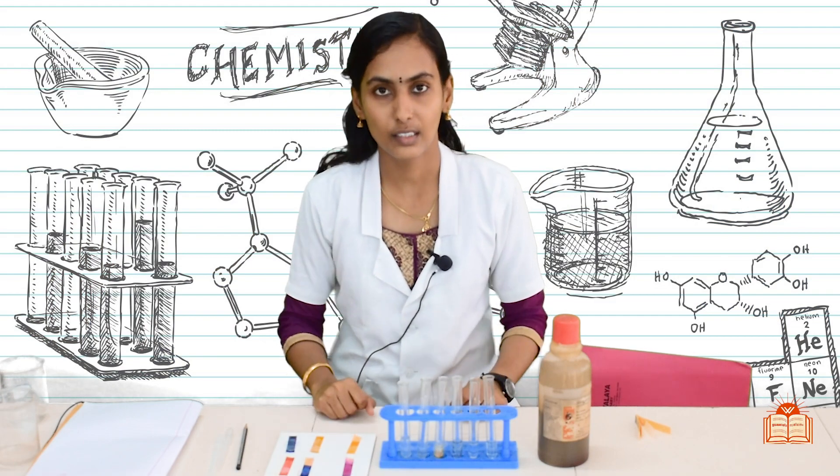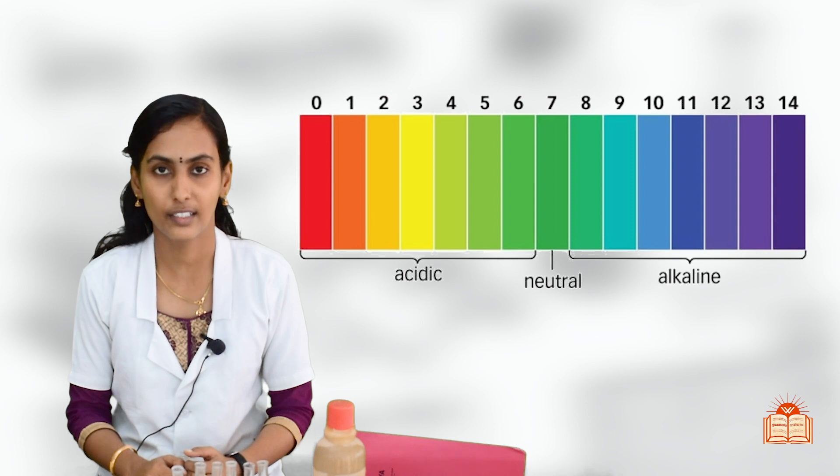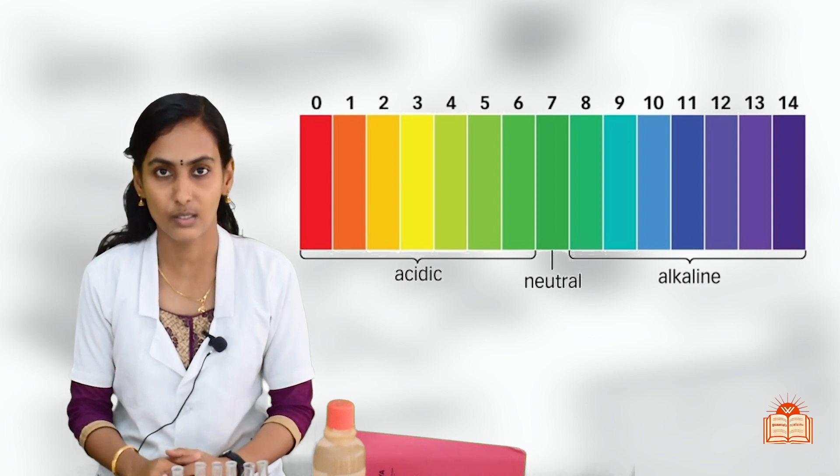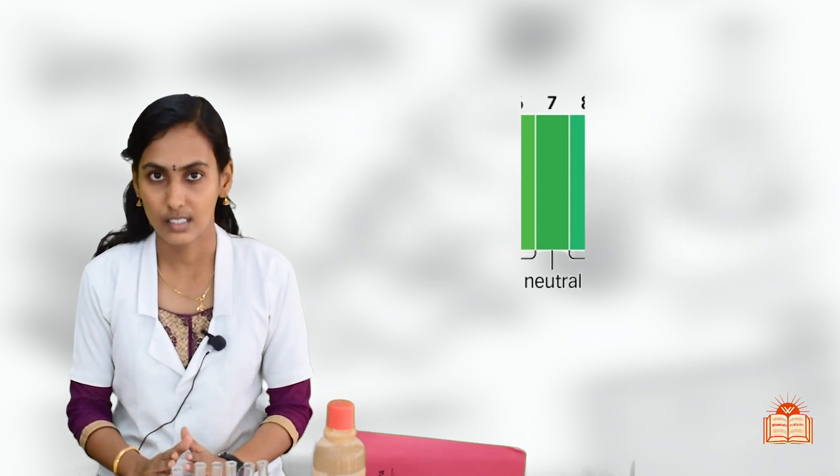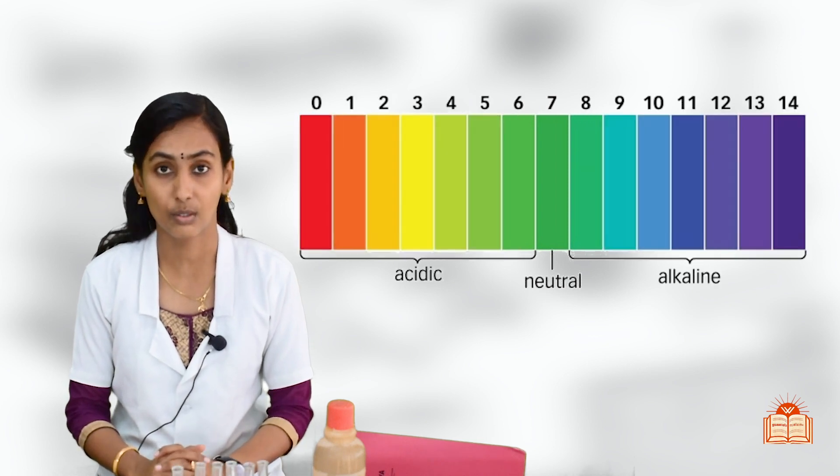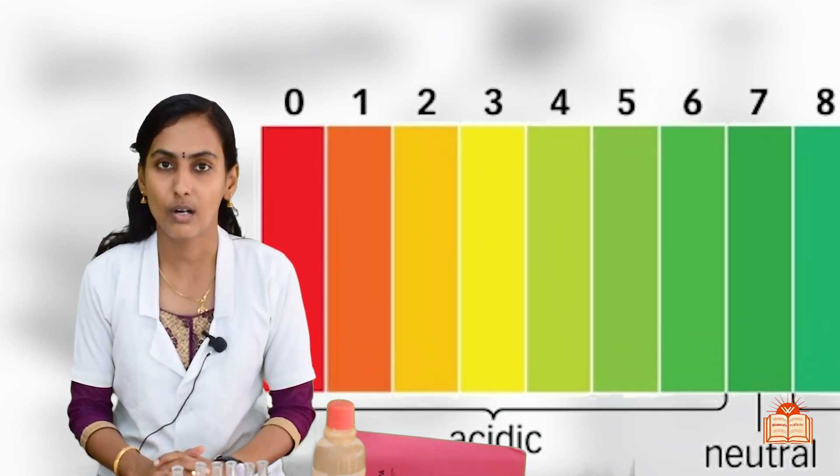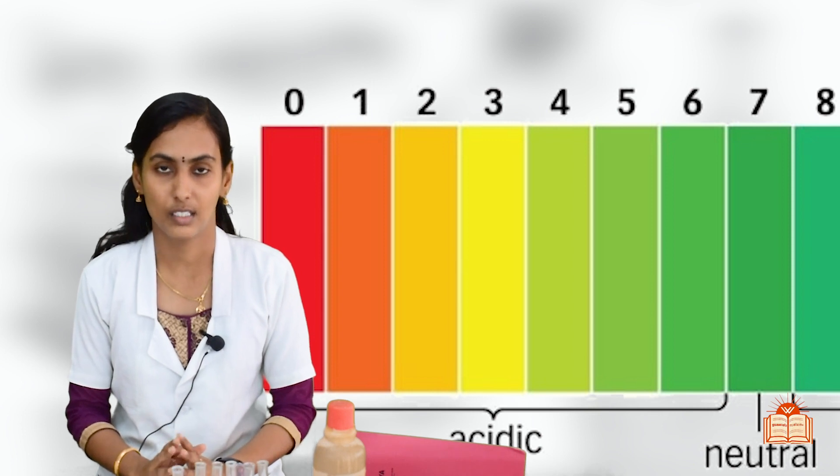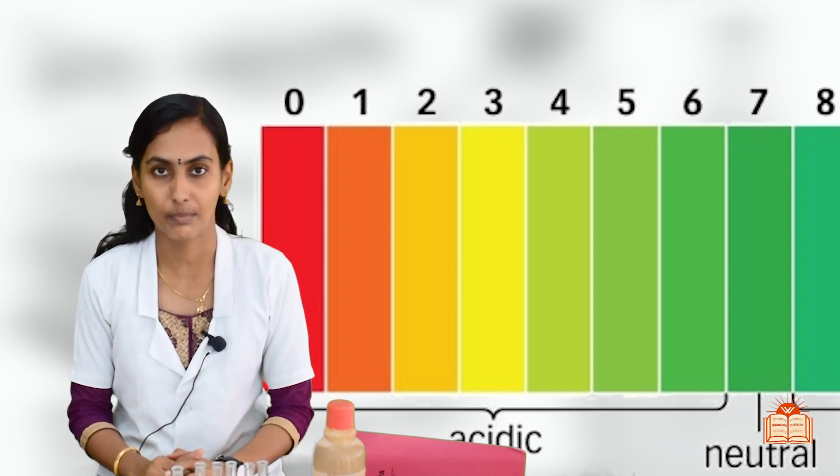Now using this color code and the pH scale, we can identify the pH value of various solutions. If it is 7, it is neutral. Below 7 it is acid, above 7 is base. 0, 1, 2, they are all strong acid. 5, 6, near to 7, it is weak acid.